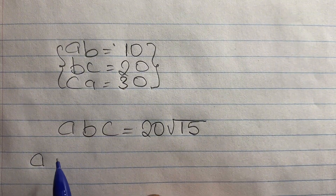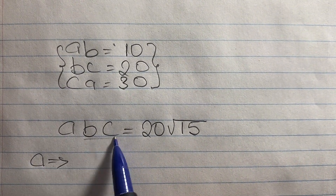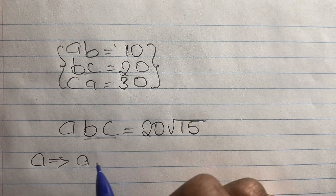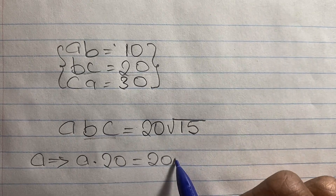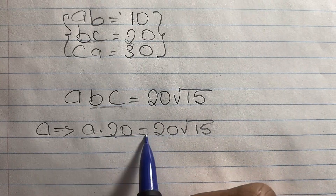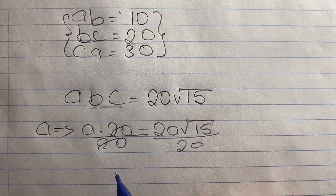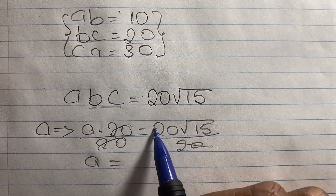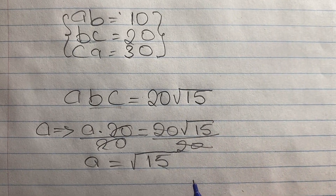Now in order to solve a plus b plus c, we need to find the individual values of a, b and c. We start with a. We can see that bc equals 20, so we have a times 20 equals 20 root 15. Dividing both sides by 20, the 20s cancel out, so the value of a equals root 15.